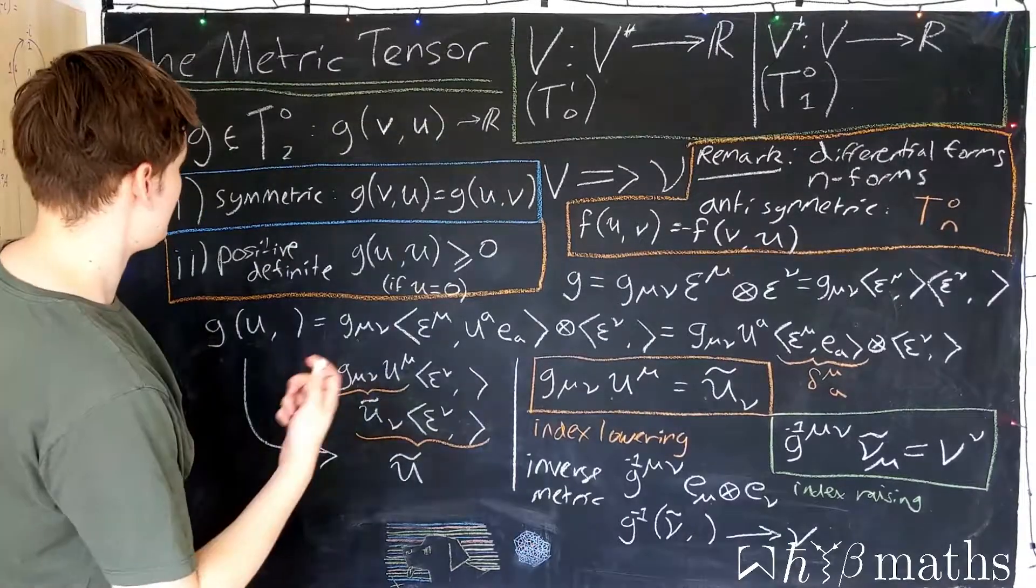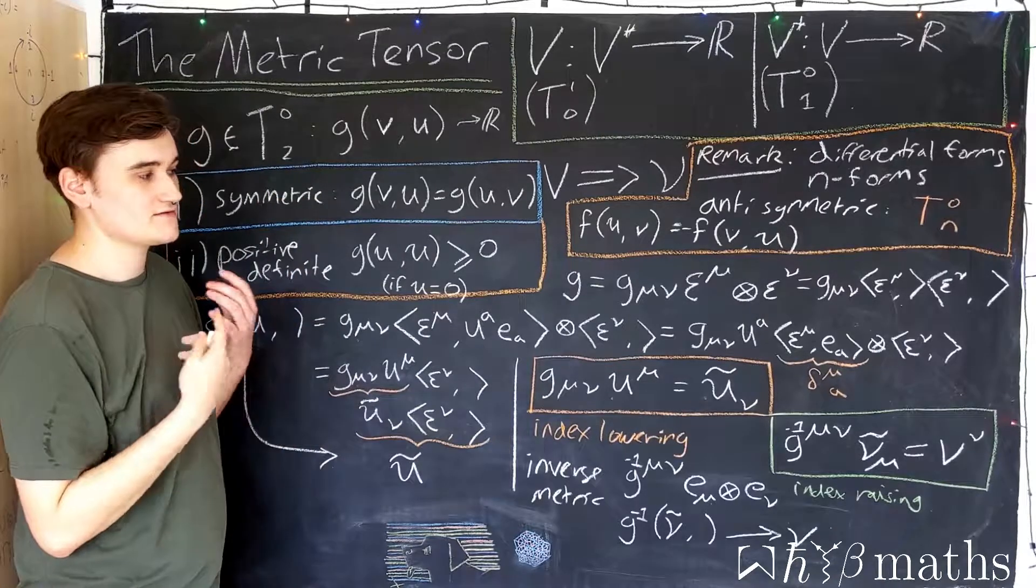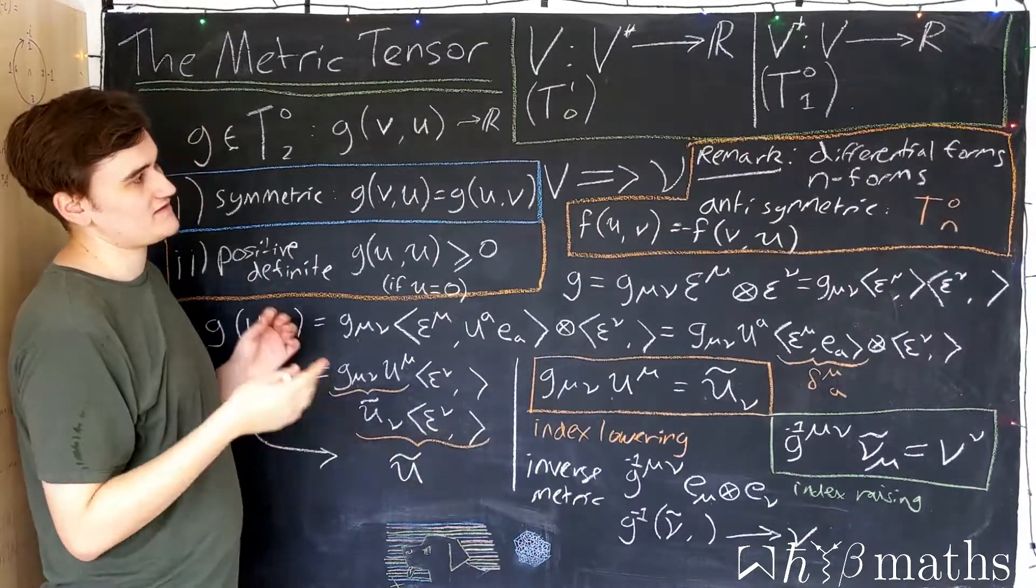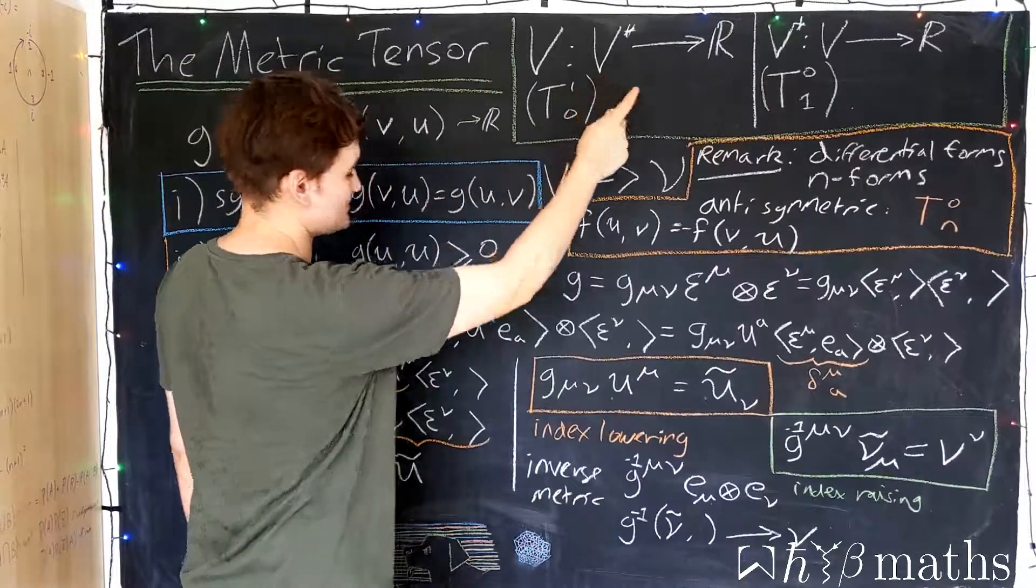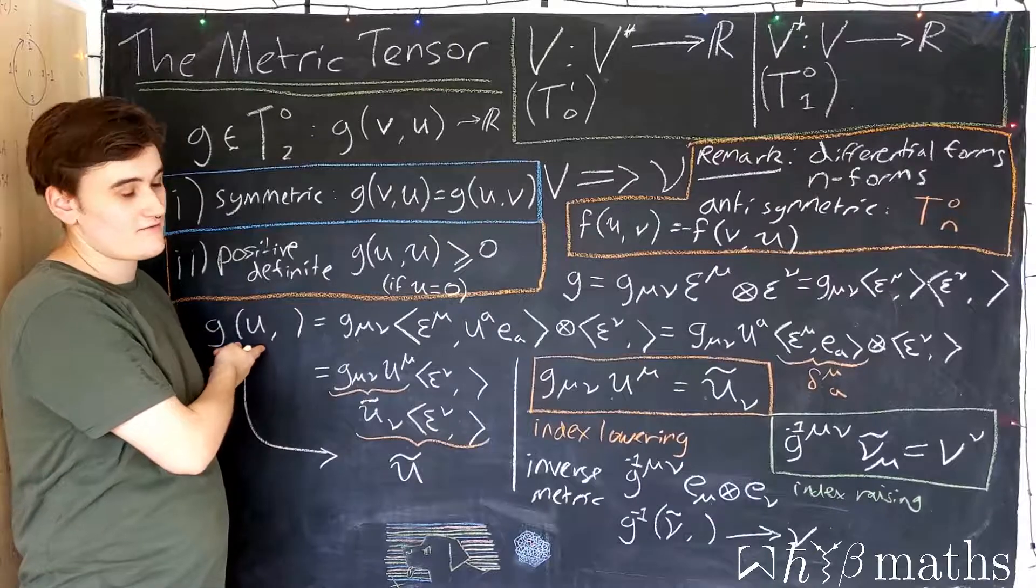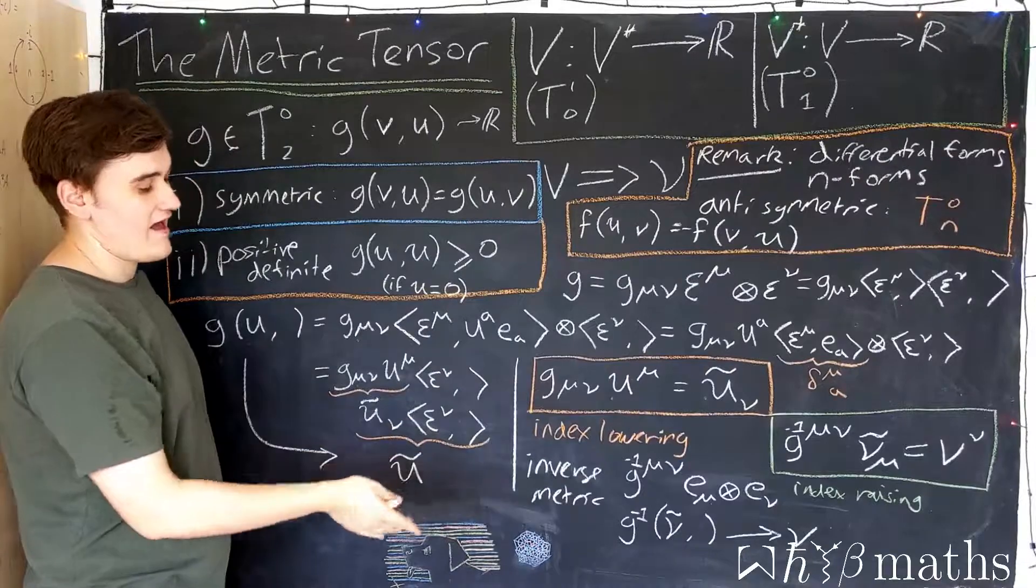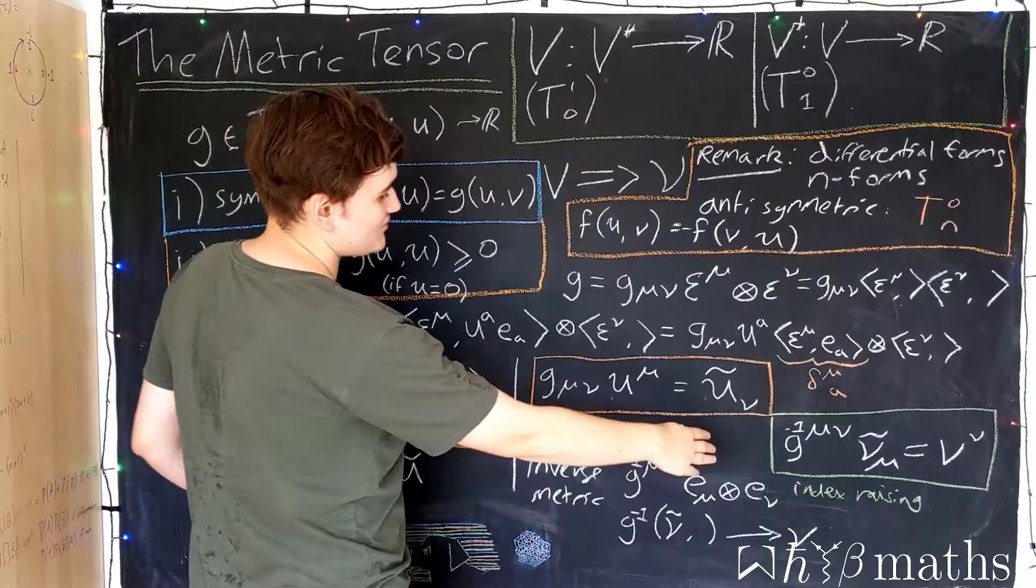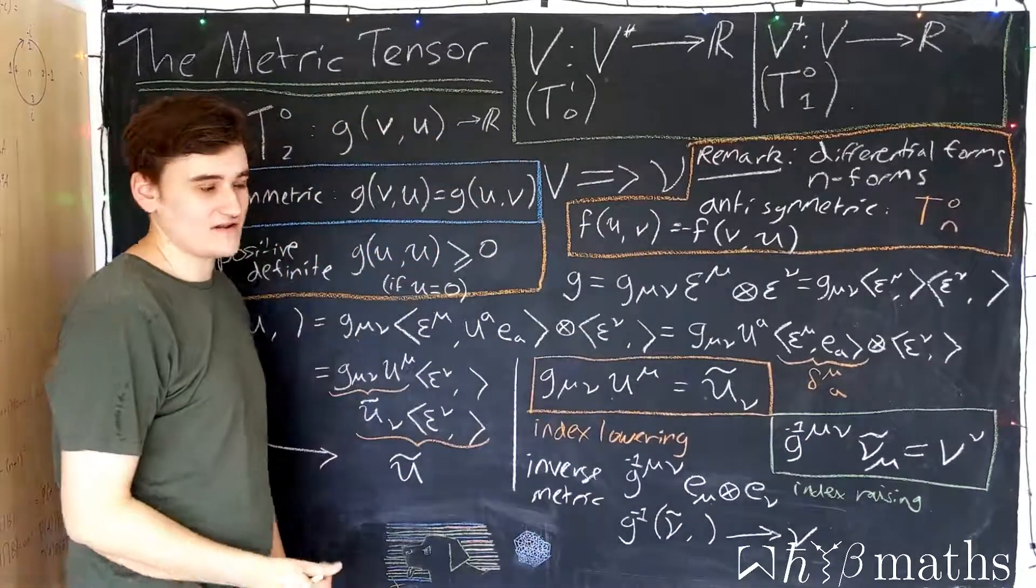So to summarize then, the metric is a special (0,2) tensor which we choose its components in such a way that it creates an isomorphism between the vector space and the dual space. Which simply means that if we feed the metric a vector, it tells us what its corresponding dual vector should be, and then likewise with the inverse metric, we feed it a dual vector and it tells us the corresponding vector.